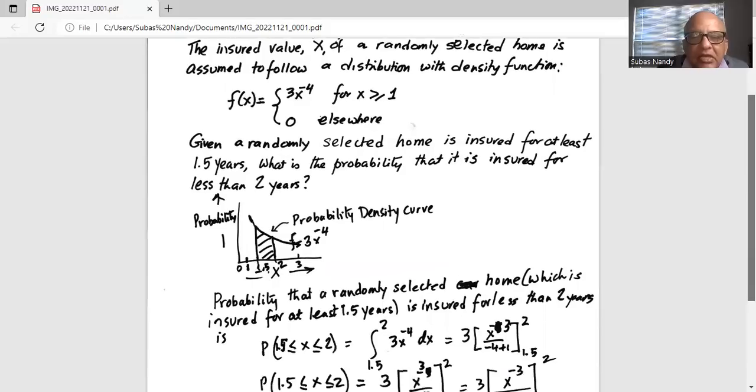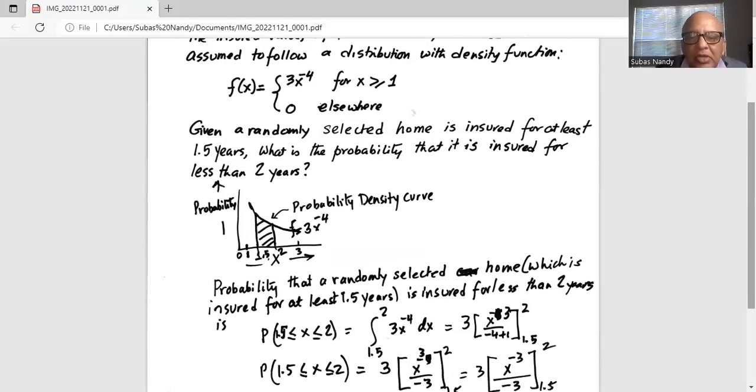So basically we want to find the area under the probability density curve between x equal to 1.5 and x equal to 2.